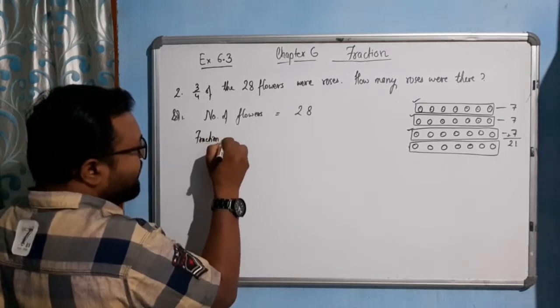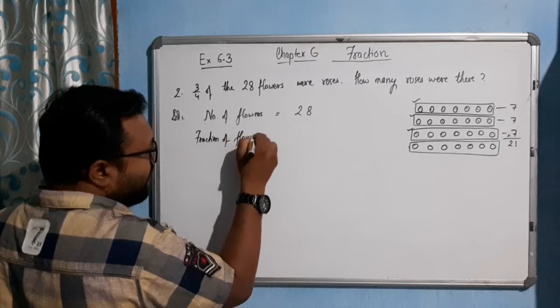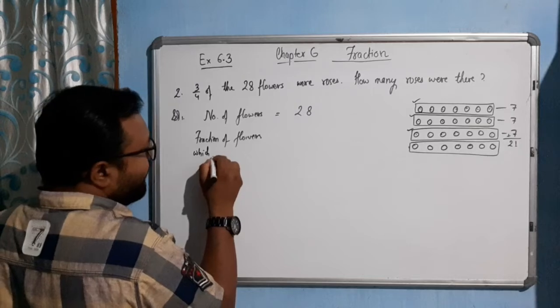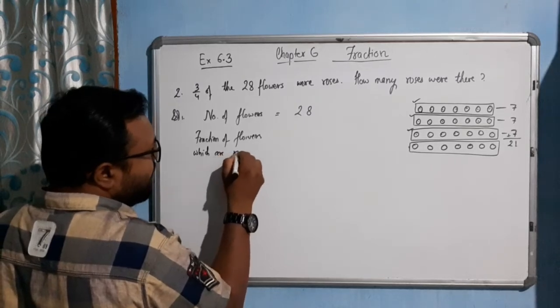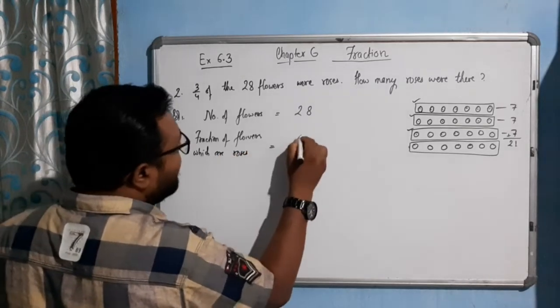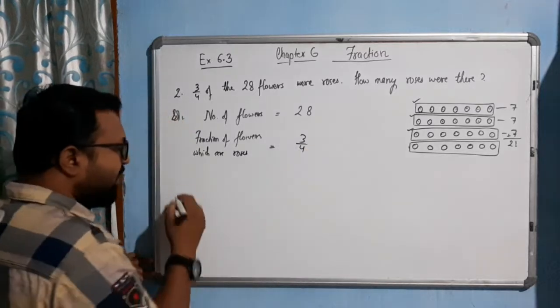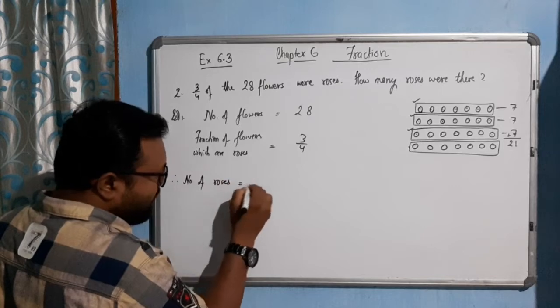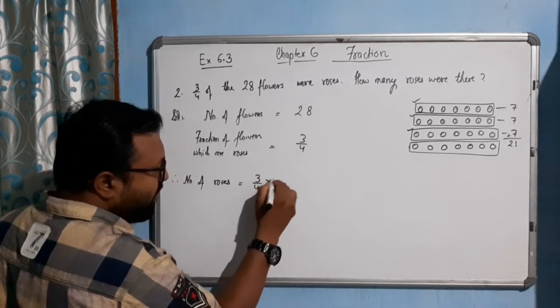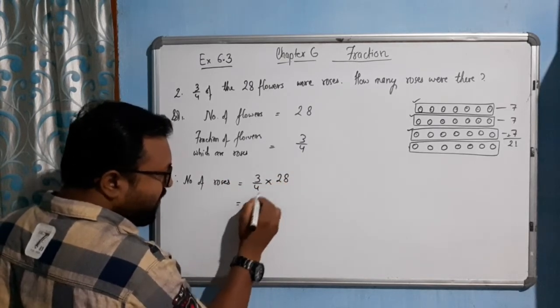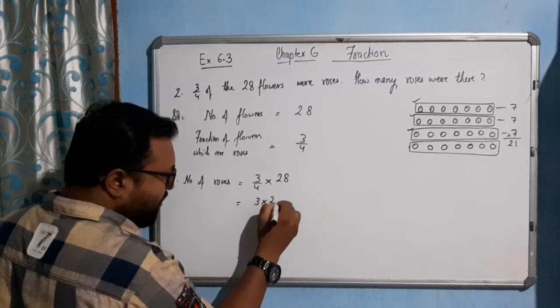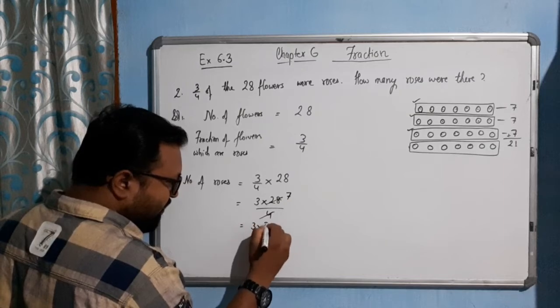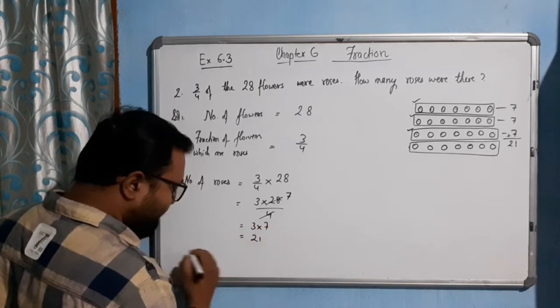Now fraction of flowers which are roses, how many? Three by four. Therefore number of roses is how much? Three by four out of 28. Three into 28 by four equals seven. Three into seven equal to 21.